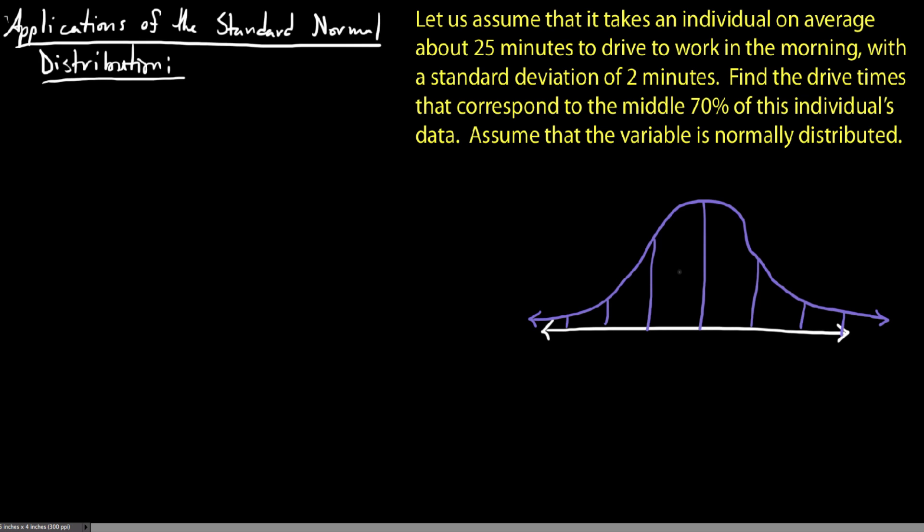Typically, the straightforward approach is given our data values and that it's normally distributed. I would want to find a probability that randomly it'll take me less than a certain amount of time to get to work. You're starting with the data value and working towards an area under the curve. And what I want you to notice is, in this situation, I'm actually starting you with that 70%, or the area under the curve, and we're going to work backwards to find the data values.